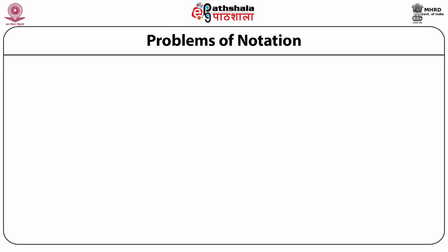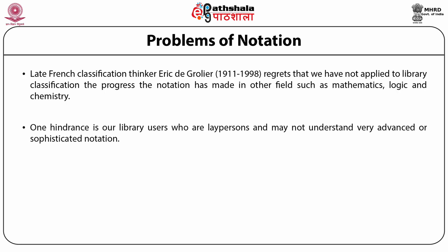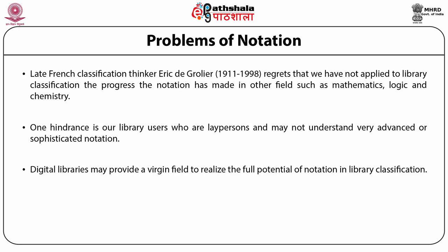Continuing with problems of notation: the late French classificationist and thinker Eric de Grolier regrets that we have not applied to library classification the progress that notation has made in other fields such as mathematics, logic and chemistry. One hindrance is library users who are laypersons and may not understand very advanced or specific notation. Digital libraries may provide a virgin field to realize the full potential of notation in library classification. In a fully automated library, one may also use more specific notation, as in a digital collection you don't have to put the call number physically on the document.